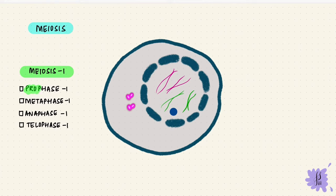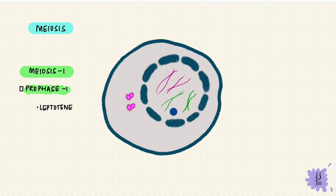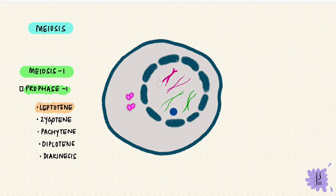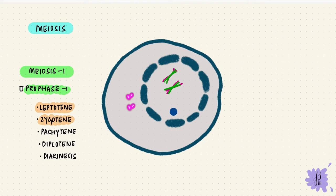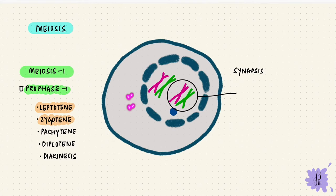We start with prophase one, and this is where it gets different. Prophase one in meiosis is longer and has sub-stages: leptotene, zygotene, pachytene, diplotene, and diakinesis. In leptotene, chromatids start to condense, going from fine and thread-like to shorter and thicker. During zygotene, homologous chromosomes find each other and pair up — this does not happen in mitosis. They lie parallel with the synaptonemal complex in between. This pairing is called synapsis, and the two pairs together have four chromatids, forming a tetrad.